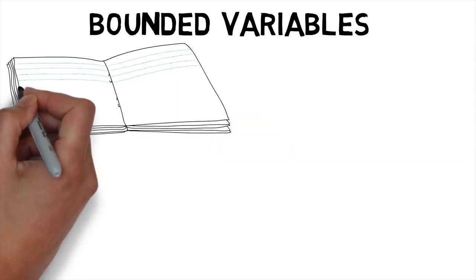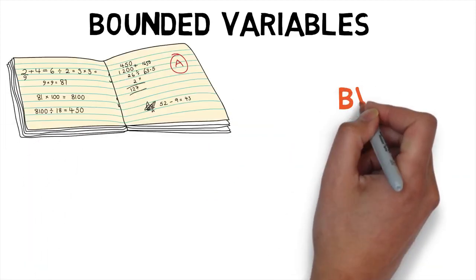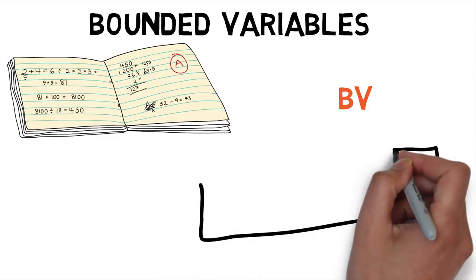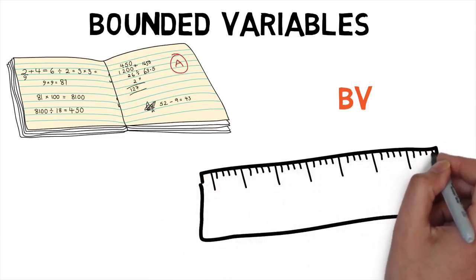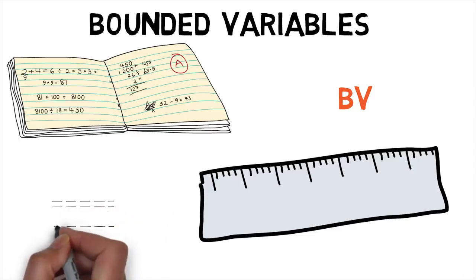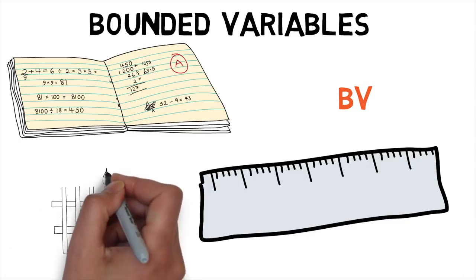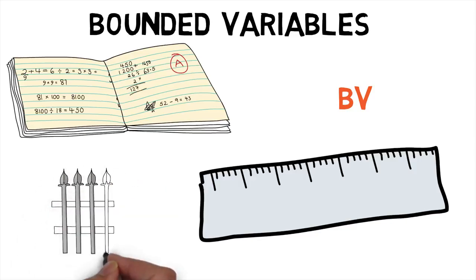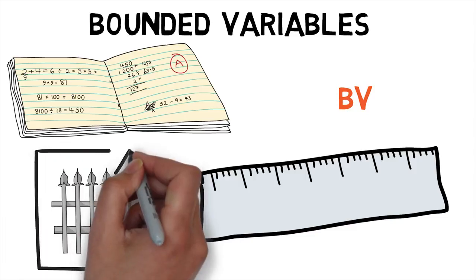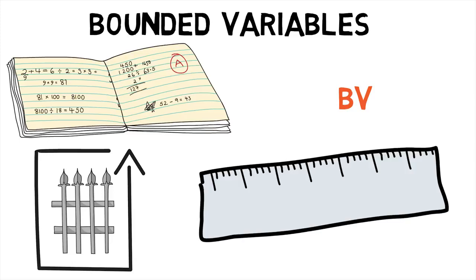In mathematical analysis, a function of bounded variation, also known as a BV function, is a real-valued function whose total variation is bounded. For a continuous function of a single variable, being of bounded variation means that the distance along the y-axis direction, neglecting the contribution of motion along the x-axis, traveled by a point moving along the graph has a finite value.